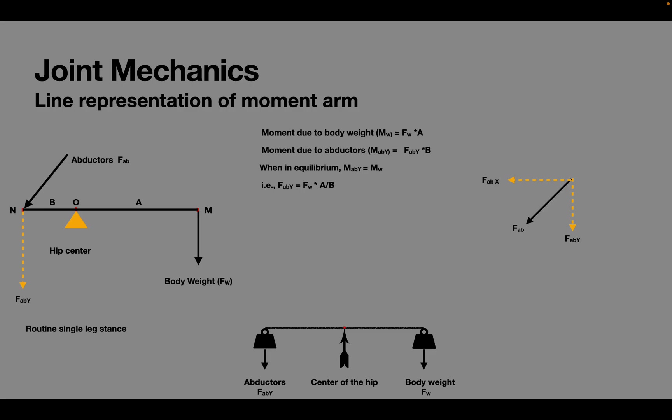As we have seen from the previous video the combined effect of the forces due to the body weight and the abductor action is borne by the joint and a vertical joint reaction force Fjr is produced.